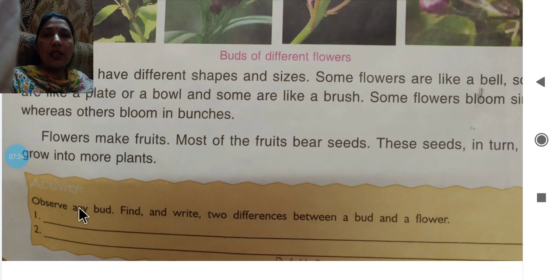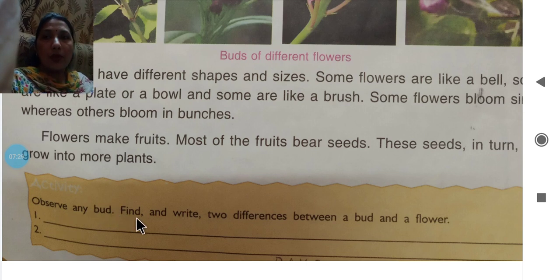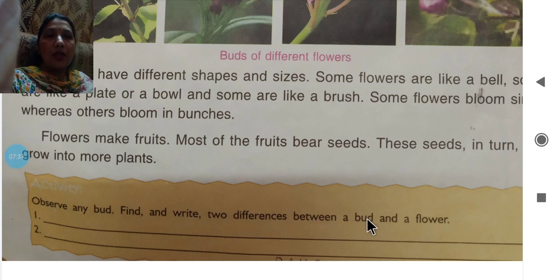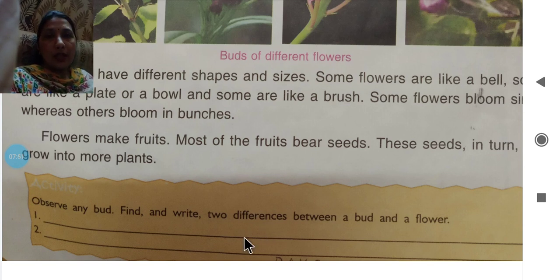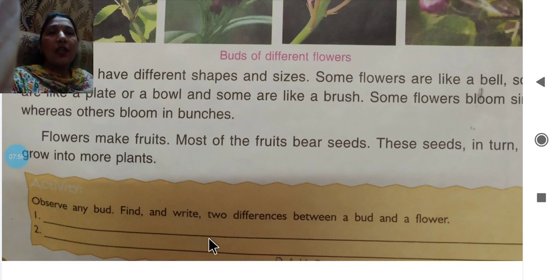Now for the activity: observe any buds. If you find a plant, write two differences between a bud and a flower — what differences can you see? You have to write two differences. Thank you, students.